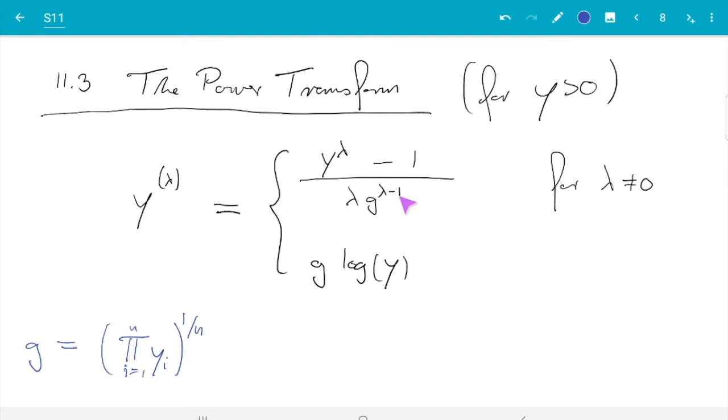The question is why are these extra terms here? The explanation you hear often is that it's so y_lambda has the same units as y. If y is in meters and lambda is 2, then y squared would be square meters. Dividing by g to the lambda minus 1 would turn square meters back to meters. That argument breaks down once you subtract 1, but people still do that to make transformed values more comparable between different lambda values.